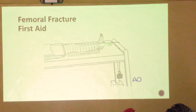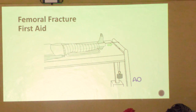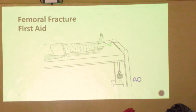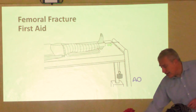Taking an example: a femoral fracture arrives in ED, the leg is short and very painful. The first thing we do is put on basic skin traction and hang some weights over the end of the bed - very effective as a first step.